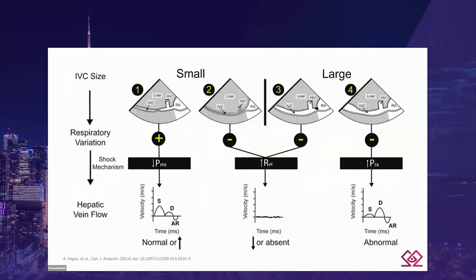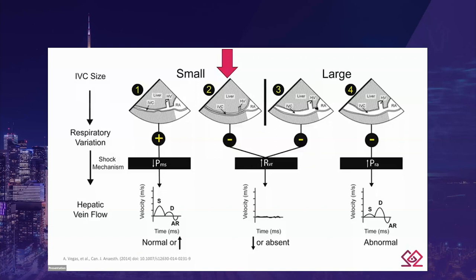Looking at the size of the IVC and the hepatic vein flow may identify the mechanism of hemodynamic instability. With reduced mean systemic venous pressure secondary to hypovolemia or pure vasodilatory shock, the IVC will often be small and hepatic vein flow will be normal or increased. With increased resistance to venous return, the IVC will be distended if the obstruction is at the IVC–right atrium junction, or collapsed if secondary to abdominal compartment syndrome — but in both cases hepatic vein flow will be abnormal with greatly reduced velocities or even no flow. In cardiogenic etiology, the IVC will be dilated and hepatic vein flow abnormal with reduced systolic-to-diastolic ratio and permanent atrial reversal velocity.